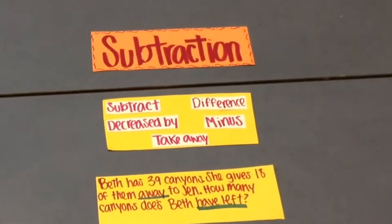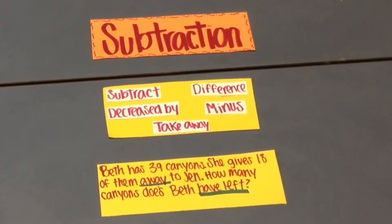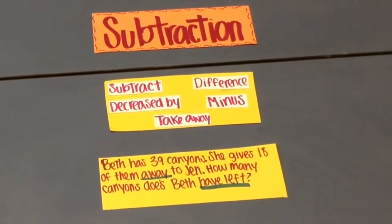An example is Beth has 39 crayons. She gives 18 of them away to Jen. How many crayons does Beth have left? The keywords here are away and have left.